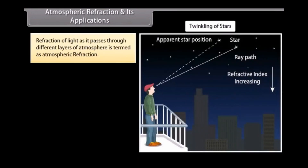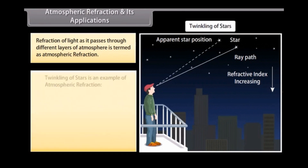Our atmosphere is not uniformly dense. Depending on local conditions, there may be hot and cool air near the ground. Hot air is lighter than cooler air and has a lesser refractive index. Due to this, starlight or sunlight entering the atmosphere undergoes refraction — this is known as atmospheric refraction.